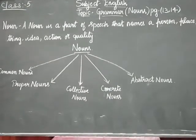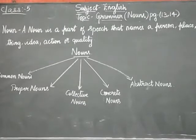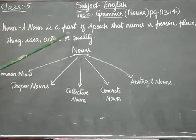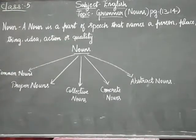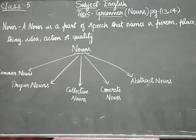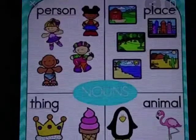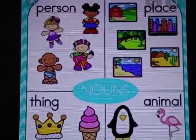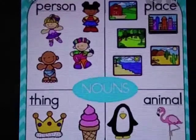First of all, what do you mean by a noun? You have studied this already in your lower classes. Let me just revise it once for you. A noun is a part of speech that names a person, place, thing, idea, action or quality. In the picture, you can see examples — it may be any person, any place, any thing or animal. It involves quality, things and actions also in a noun.